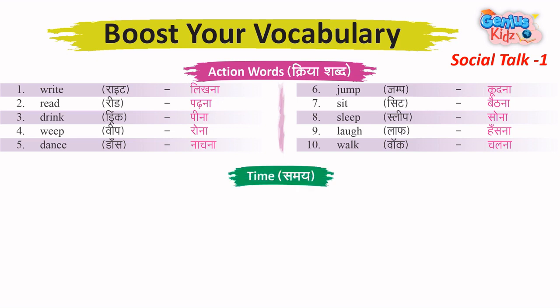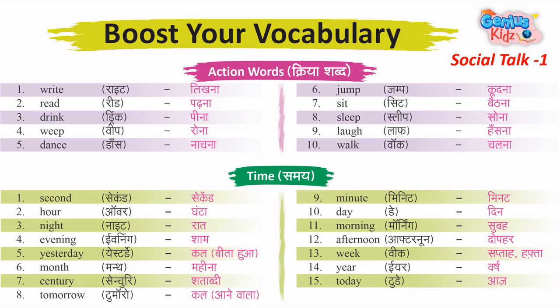Time – Samay. 1. Second. 2. Hour – Ghanta. 3. Night – Raat. 4. Evening – Shyam. 5. Yesterday – Kal (beeta hua). 6. Month – Mahina. 7. Century – Shatabdi.